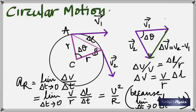What if the velocity also changes in magnitude? Then there is another type of acceleration called tangential acceleration, which is along the tangent and involves a change in the magnitude of velocity. The angle between tangential and radial acceleration is 90 degrees, so they do not affect each other — the x and y components are independent.